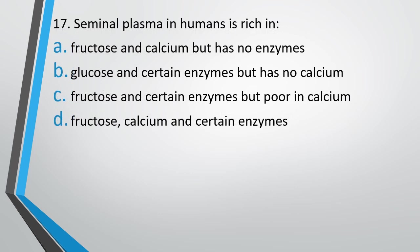Question number 17. Seminal plasma in humans is rich in: fructose and calcium but no enzymes, glucose and certain enzymes but no calcium, fructose and certain enzymes but poor in calcium, or fructose, calcium and certain enzymes. The correct answer is option D — fructose, calcium and certain enzymes.